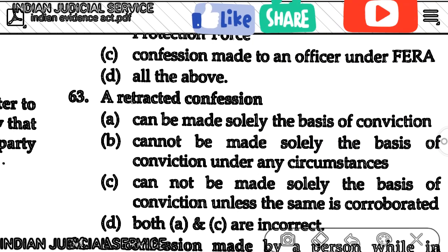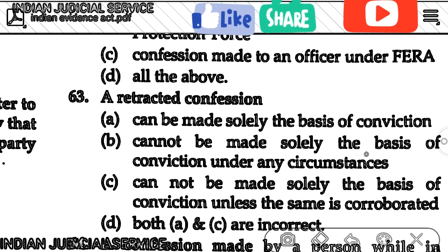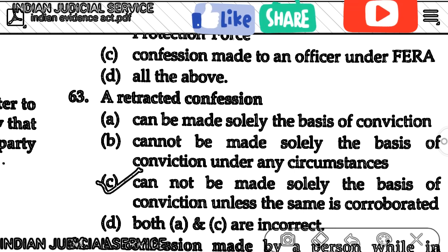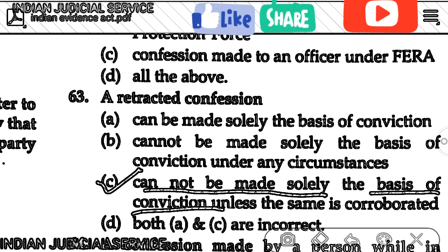Question number 63: A retracted confession — can a conviction be made solely on the basis of a retracted confession? The answer is option C — conviction cannot be made solely on the basis of a retracted confession unless the same is corroborated.